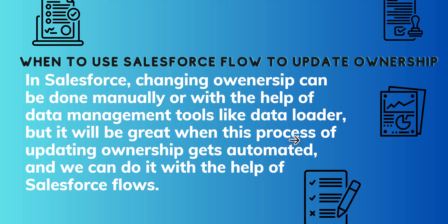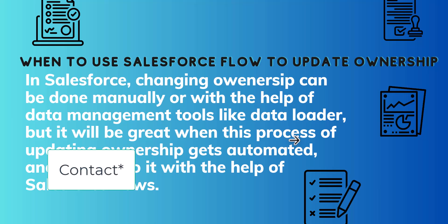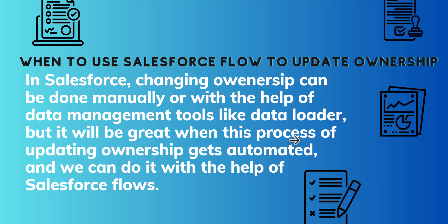The process I'm going to explain is based on an example where I was assigned a task to update the ownership of contacts related to a specific account. I had to update both the account ownership and the contact ownership to the same user. As a solution I created a record triggered flow that will update the contact ownership to the new owner of the account. Let's move ahead and see how we will create the flow.